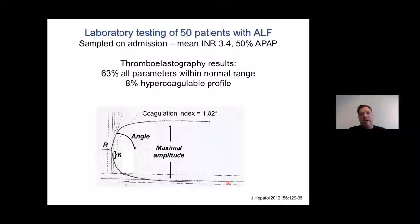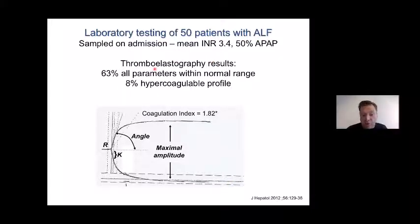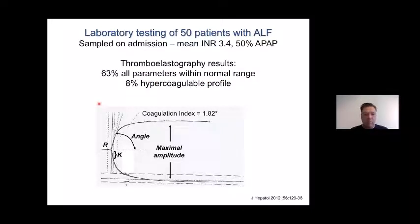If these patients don't bleed despite having abnormalities in routine tests such as platelet count and INR, how does that connect? This may be explained when you do more global tests of hemostasis. In an earlier study from the ALF Study Group of 50 patients tested with a viscoelastic test — thromboelastography, or TEG — in the majority of patients, all TEG parameters are within the normal range, despite the fact that the INR is very high. And 8% of these patients even have a hypercoagulable profile. This showed evidence of rebalanced hemostasis also in ALF.